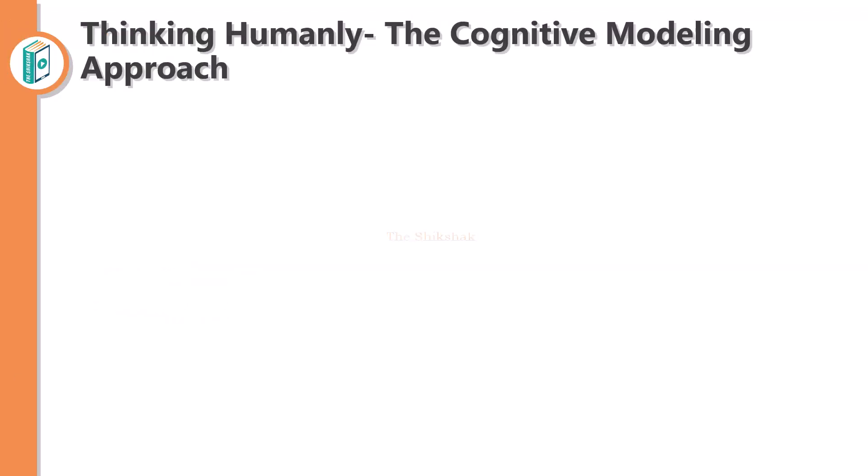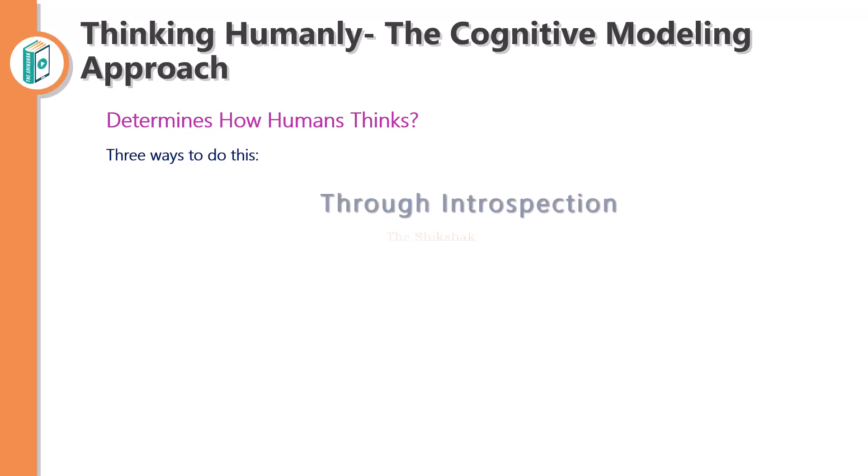The second approach is thinking humanly — the cognitive modeling approach. Cognitive modeling means it is a study of the mind and its processes — a study of the human mind and how it processes. Cognitive science is a very interesting field. If a particular program thinks like a human, then we need to determine how the human thinks. We study the actual functioning of the human mind by applying three things. First, through introspection — trying to catch our own thoughts.